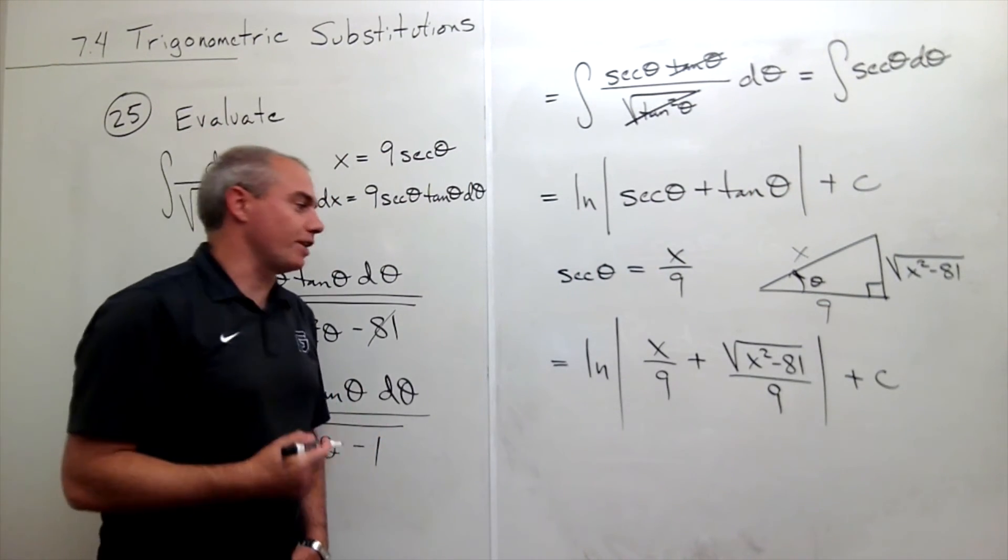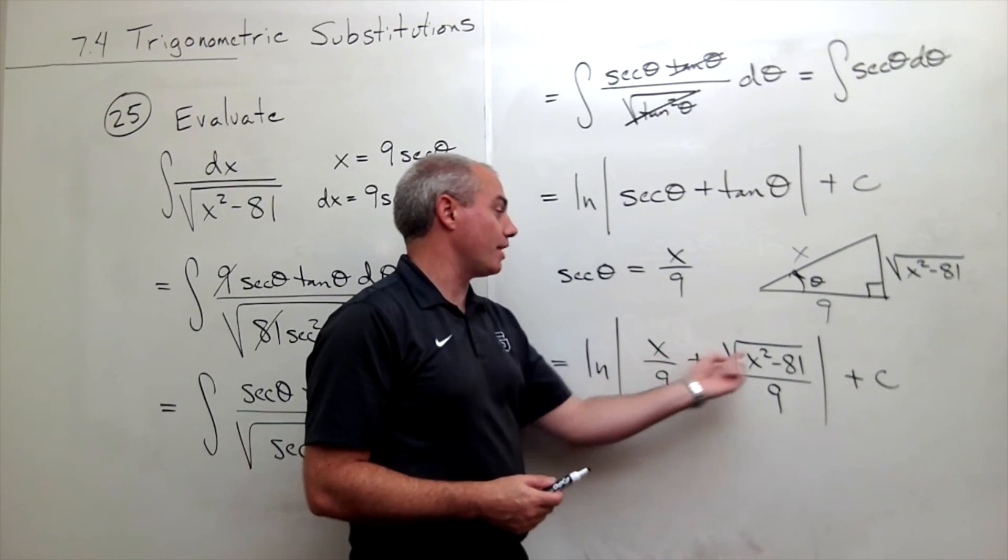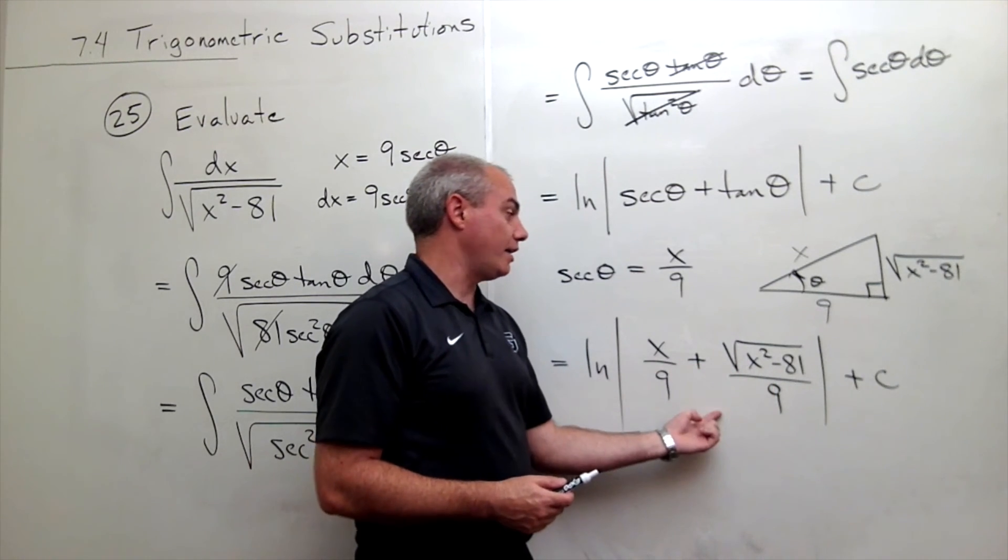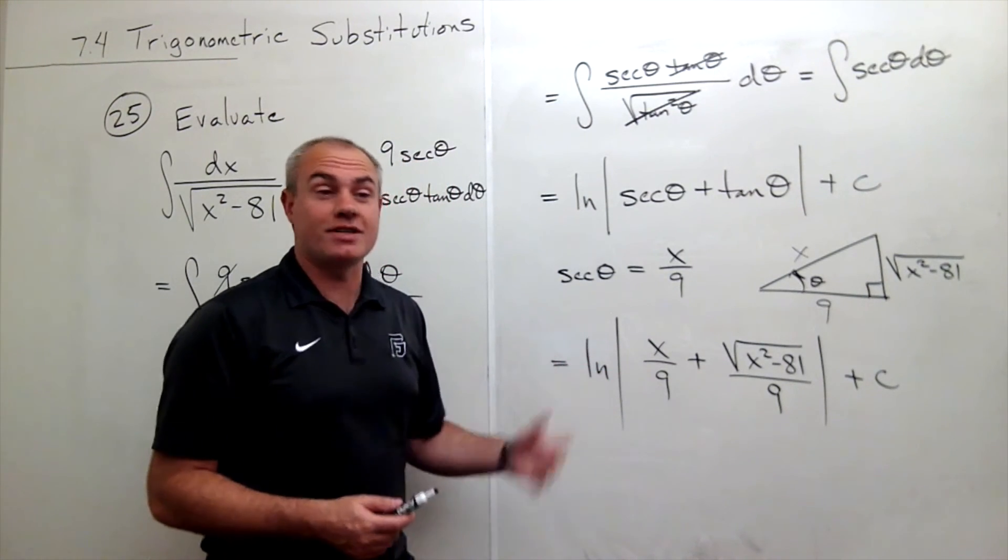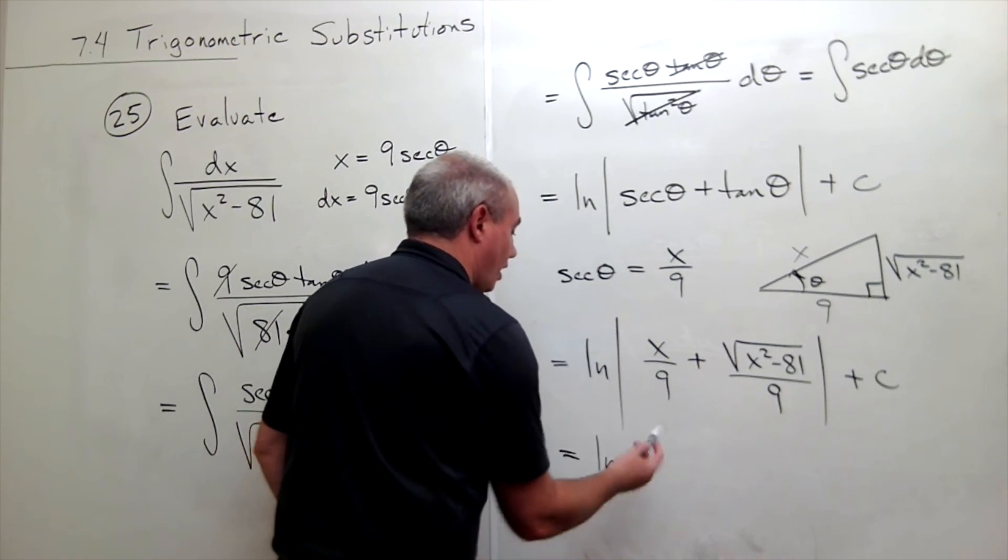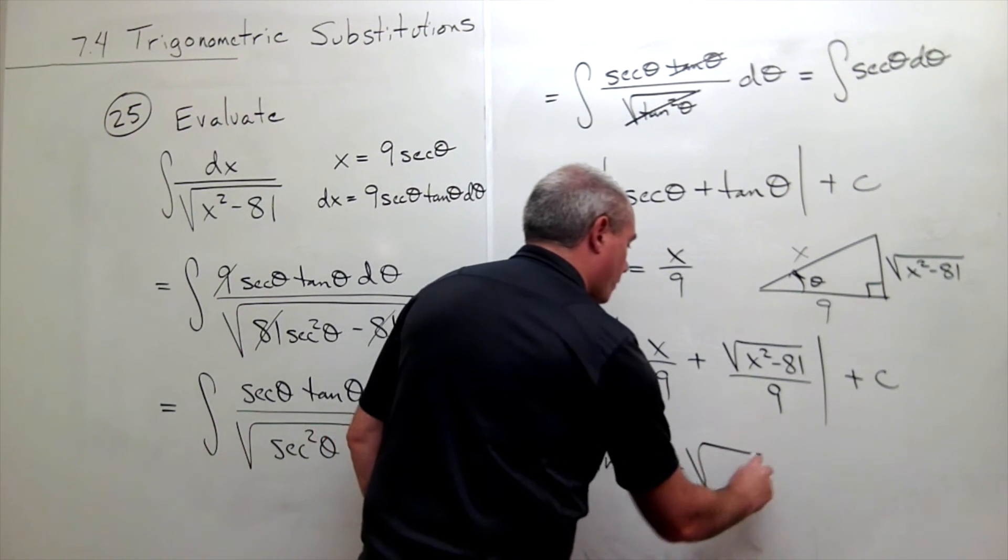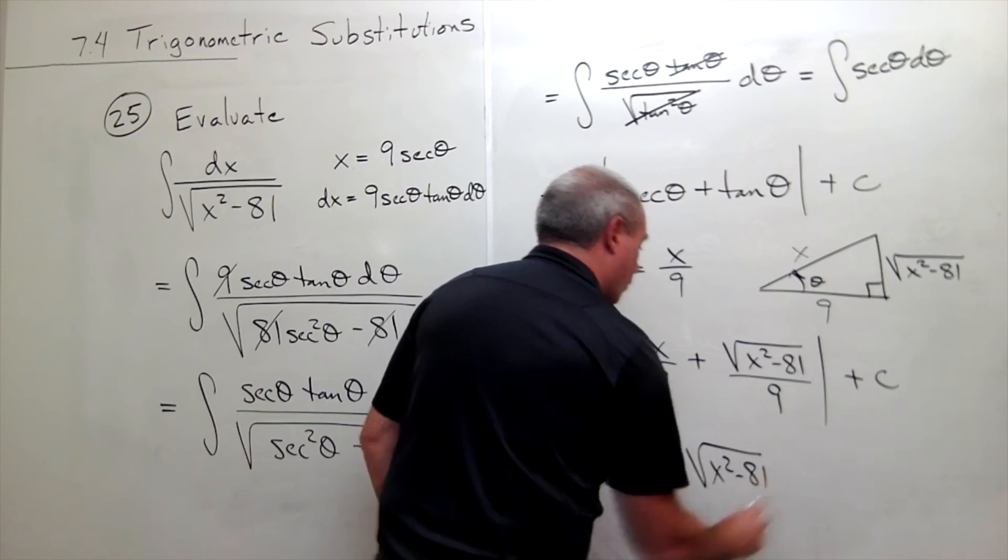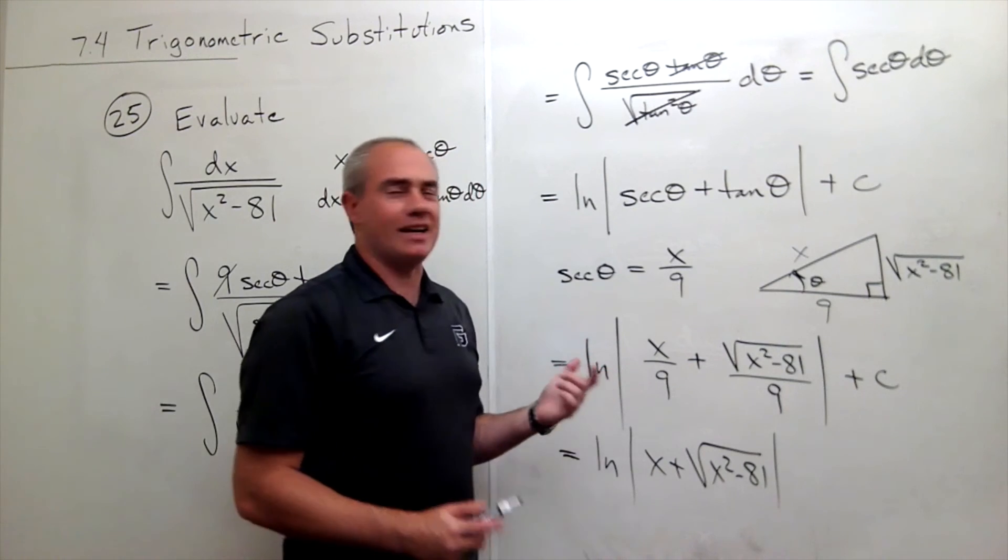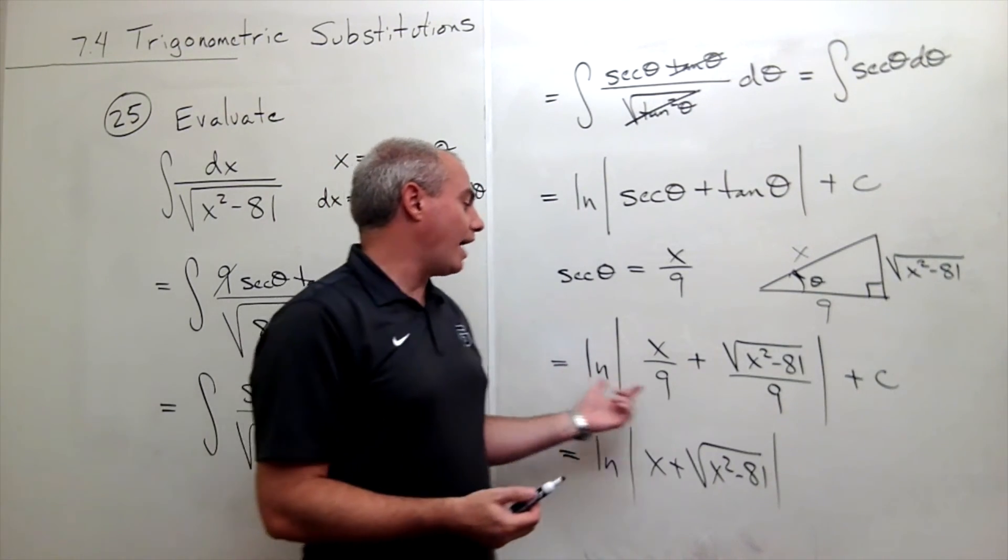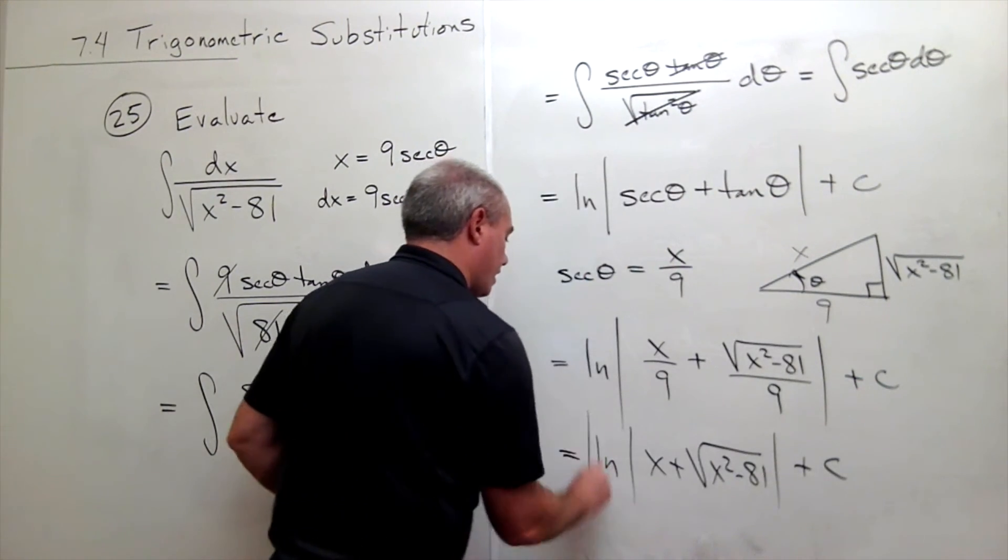Here's something tricky: these have a common denominator of 9. When something is divided by something else inside a natural log, I can split it up as ln of the top minus ln of the bottom. The top is x plus the square root of x squared minus 81. I'd get minus ln of 9, but ln of 9 is just a constant, so I can absorb it into the plus c.